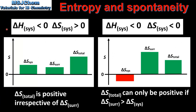There are two possible combinations for exothermic reactions. For an exothermic reaction that results in an increase in entropy of the system, the total change in entropy is positive irrespective of the surroundings. For an exothermic reaction that results in a decrease in entropy of the system, the total change in entropy can only be positive if the change in entropy of the surroundings is greater than the decrease in entropy of the system.